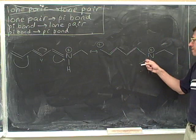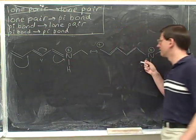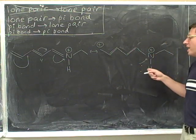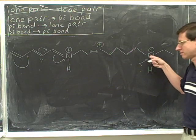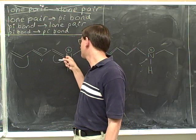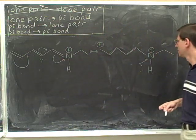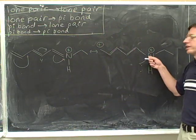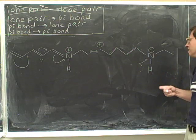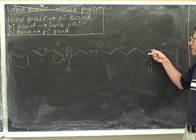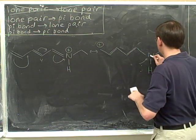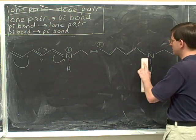Now we've finally made it to the final head in the string of arrows. It is pointing directly at this nitrogen. That means we're not forming another pi bond — we're forming a lone pair. When the head is pointing to a sigma bond, we're forming a pi bond, but when the head is pointing to an atom, we're forming a lone pair. We're not actually going to draw that lone pair. But because we're at the final head, we need to change the charge on this atom. This atom started with a positive charge and it's gaining electrons, so it becomes neutral.